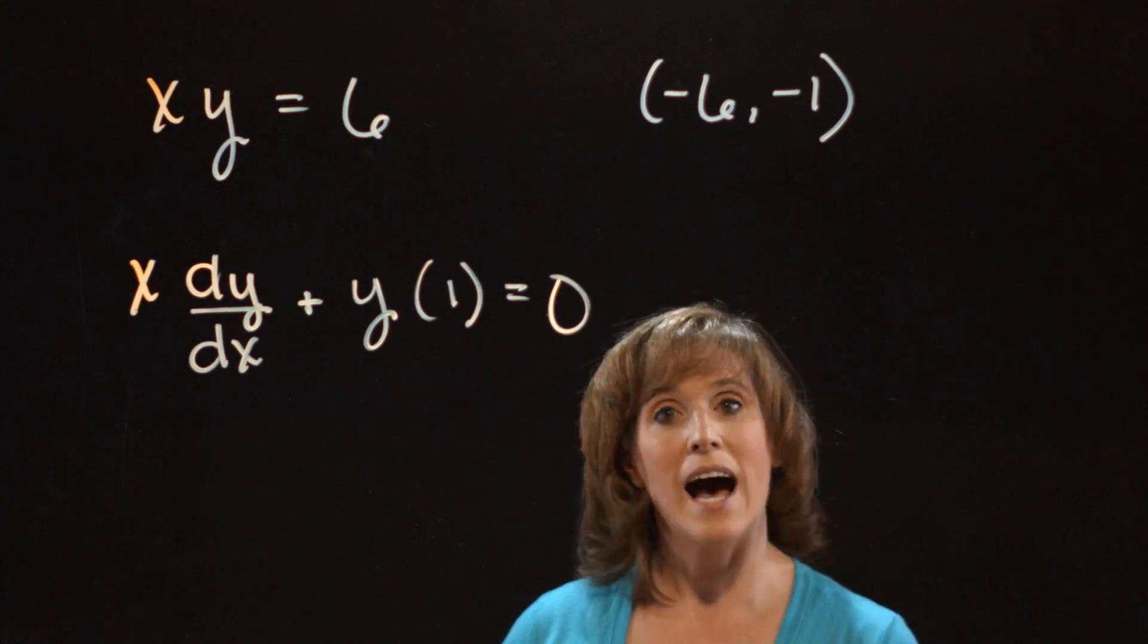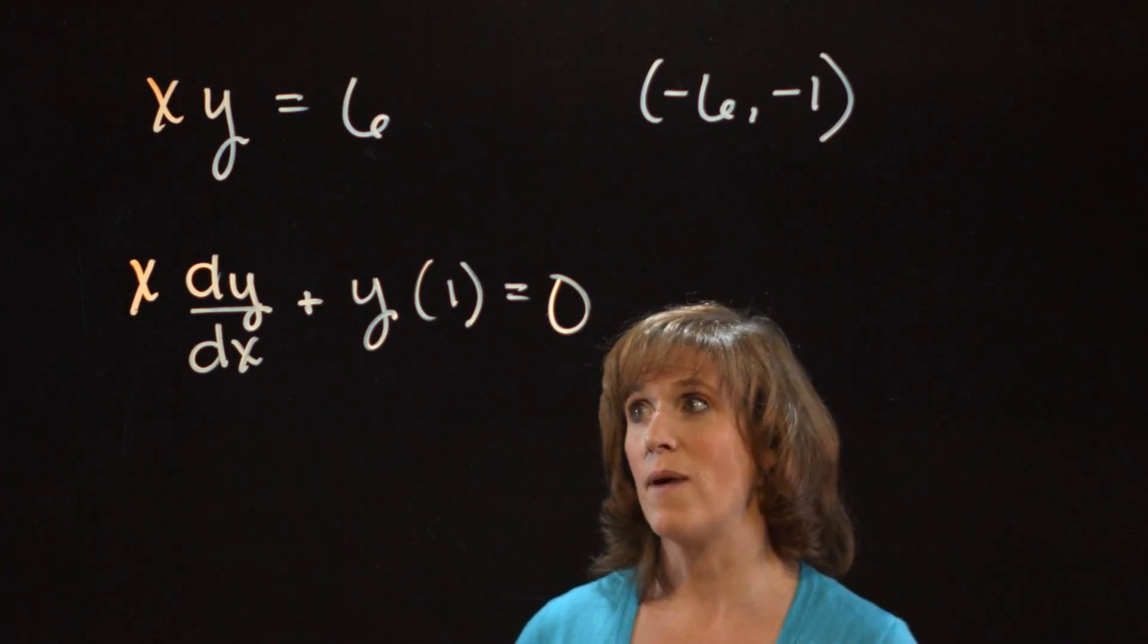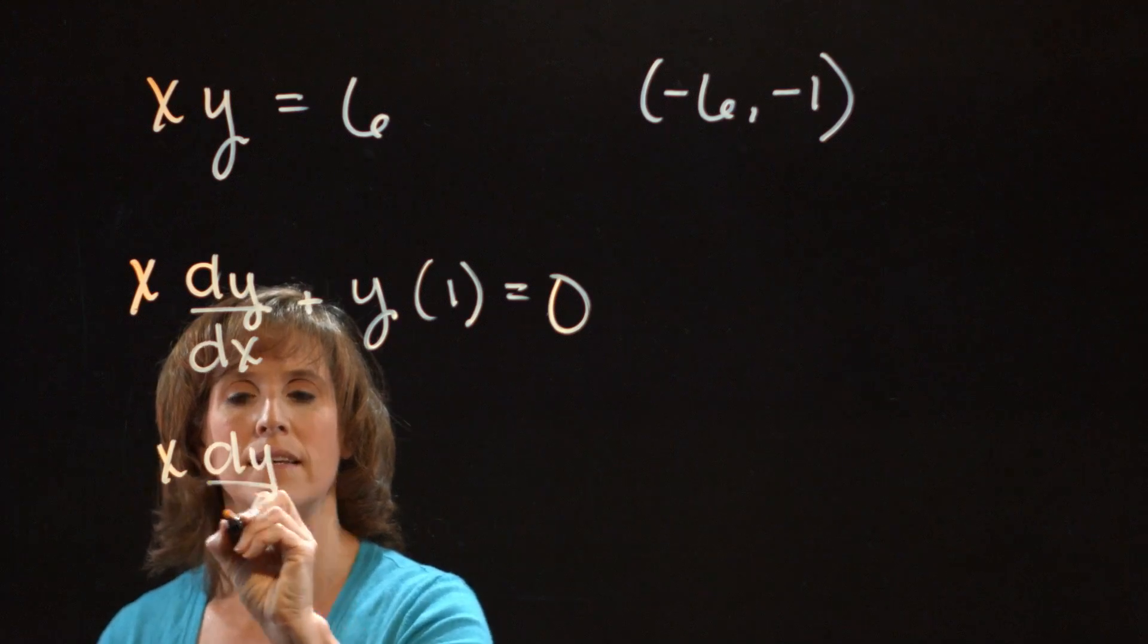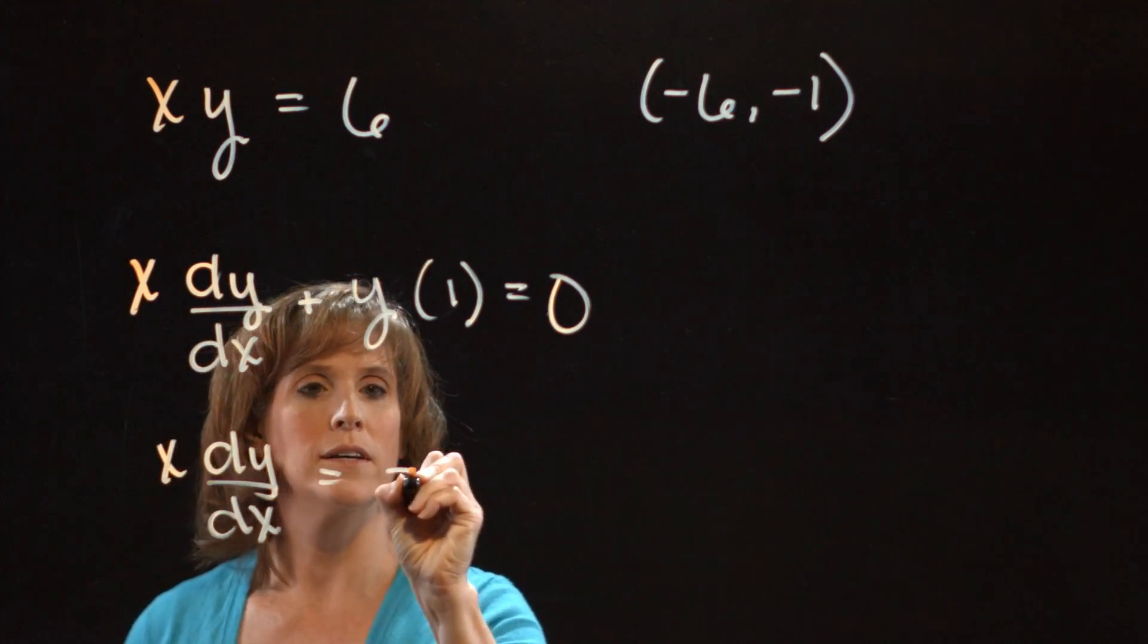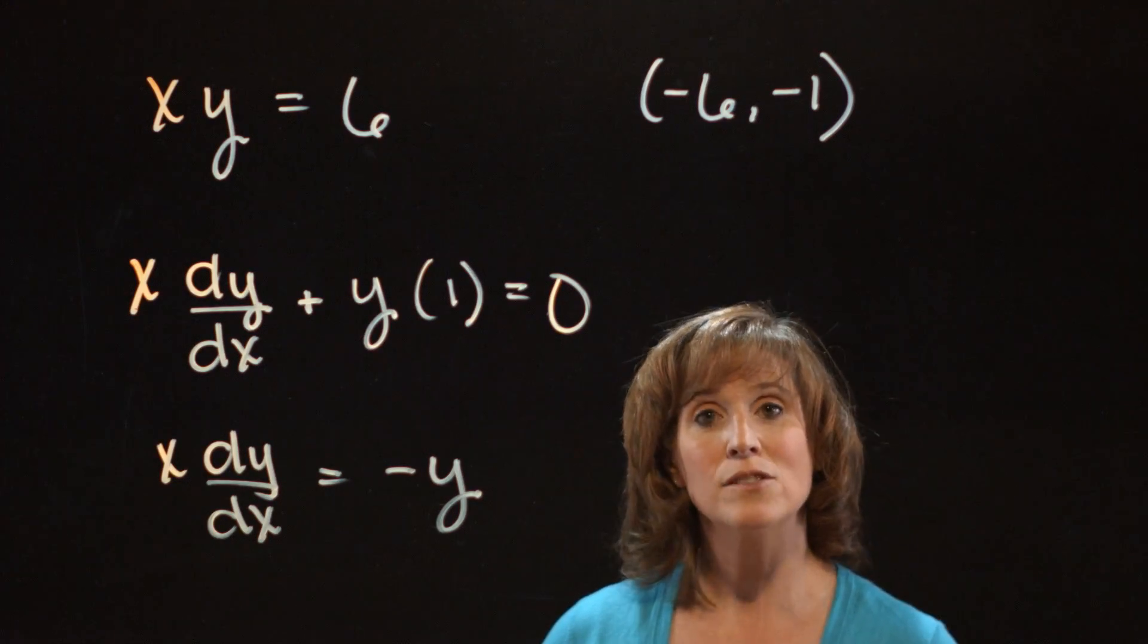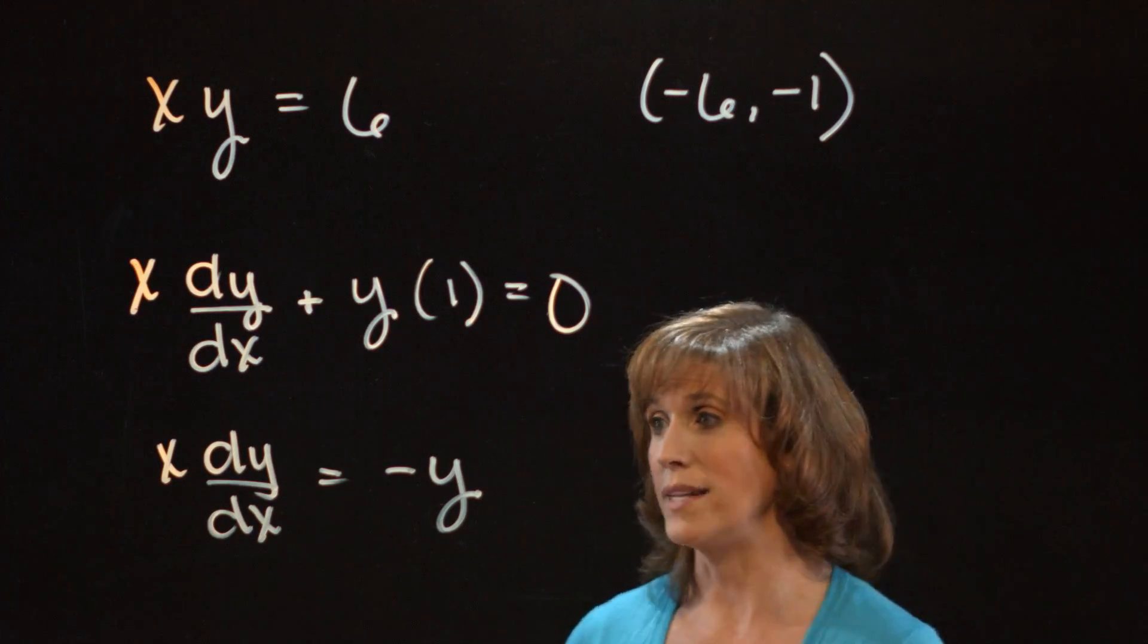Next, I want to isolate all the dy dx terms on one side of my equation. So I'll have x dy dx is equal to minus y. And finally, I can divide both sides by x, so that I've completely isolated the dy dx.